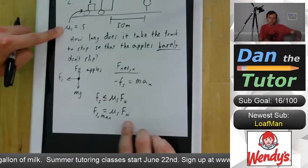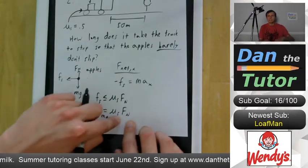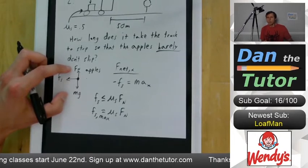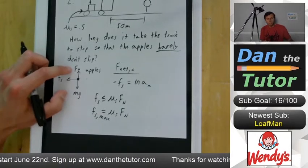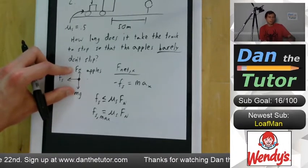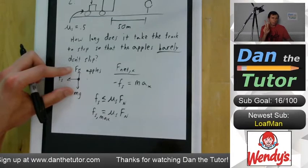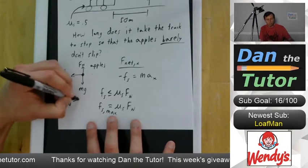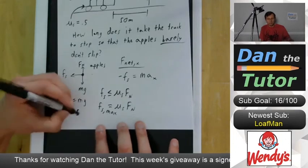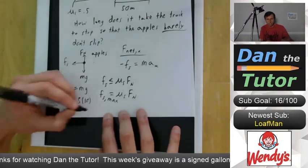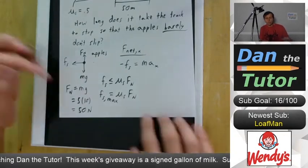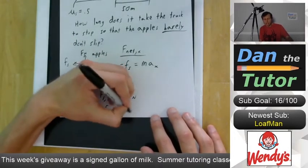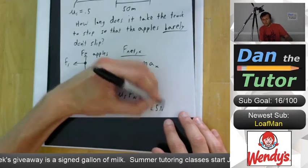Do we have μs? Yes, it's 0.5. Do we have the normal force? Not yet, but we can find it. In the y direction, the crate of apples is not accelerating up or down, so normal force equals gravity: Fn = mg = 5 kg × 10 = 50 newtons. So fs = μs × Fn = 0.5 × 50 = 25 newtons.